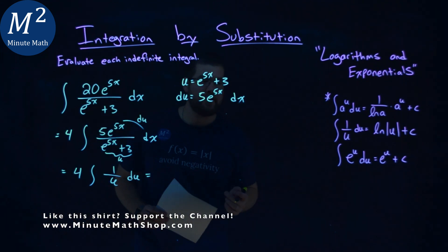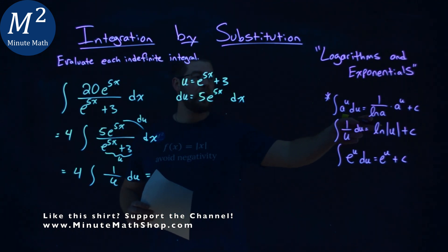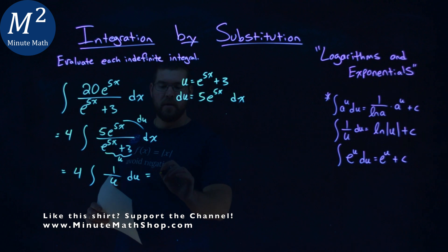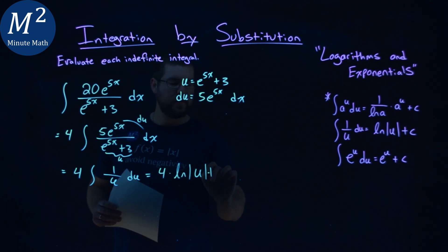Now we can use our definitions here. Integral of 1 over u du is the natural log of the absolute value of u plus c. So 4 stays out here times the natural log of the absolute value of u plus c.